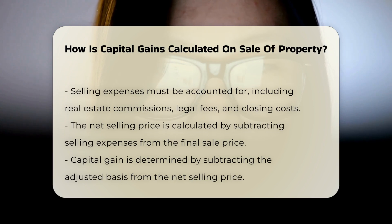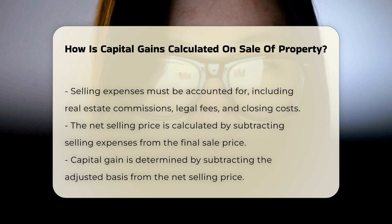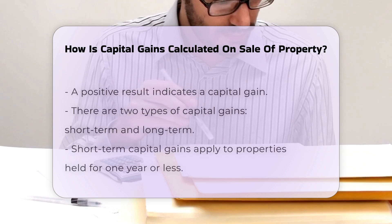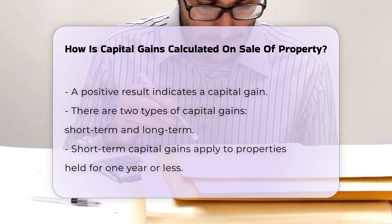Once you have the basis and selling expenses, you calculate the net selling price. This is the final sale price minus any selling expenses. The capital gain is then determined by subtracting the adjusted basis from the net selling price.